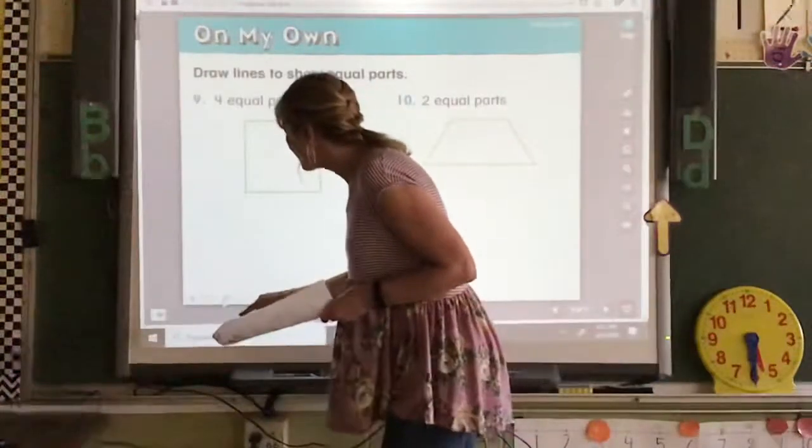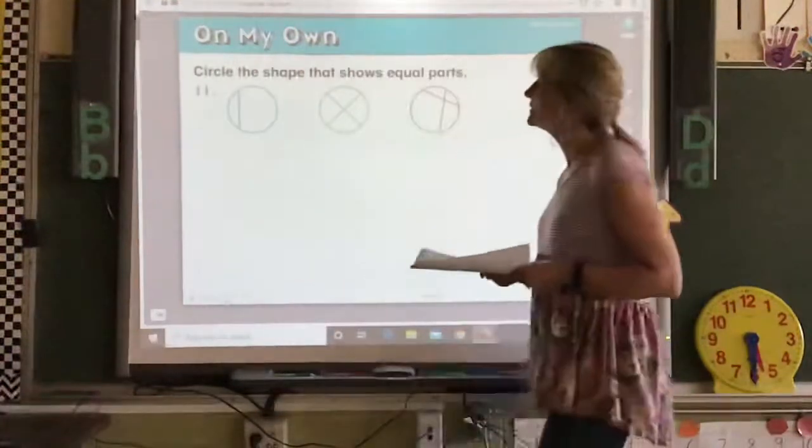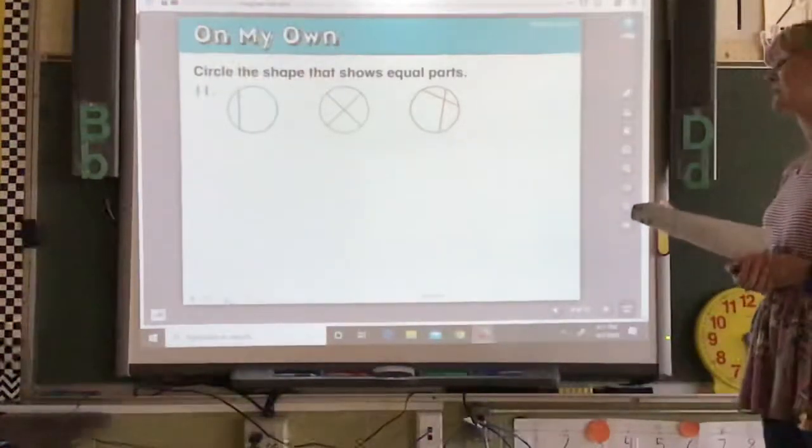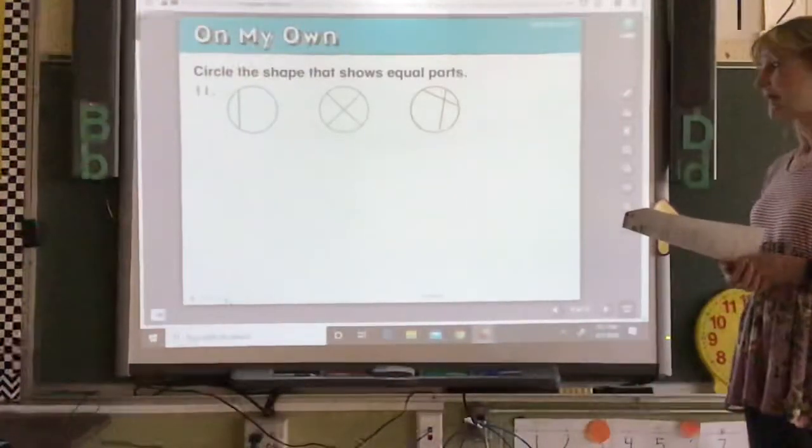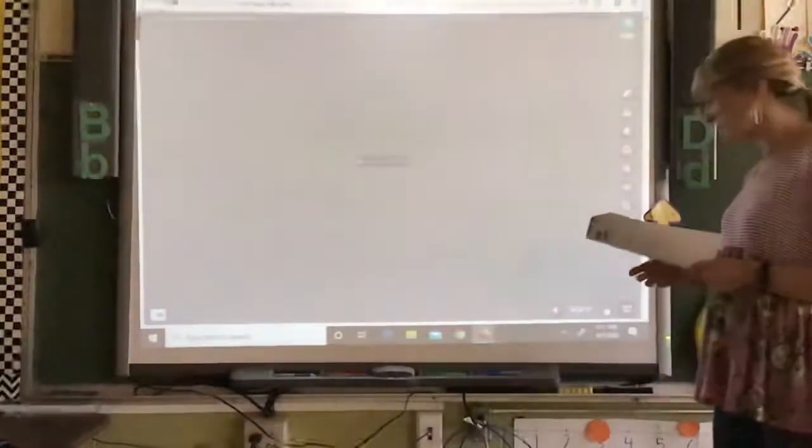And then on the last one on this page, it says, Circle the shape that shows equal parts. And you can look at that. If you look carefully, you can see the lines that are equal. Let's go to the back side.